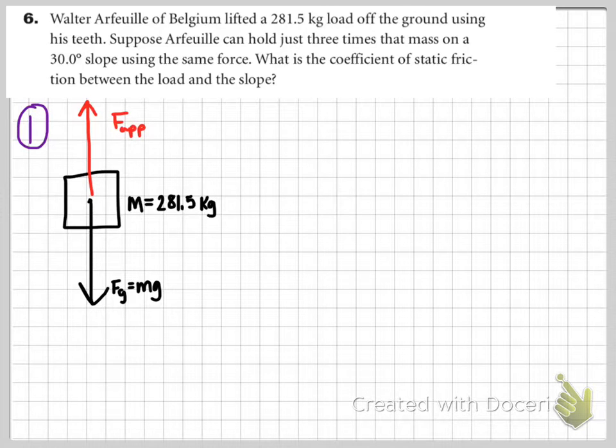It's Moser with some hints and tips on your 4C worksheet. This is 4C number six and we've got some crazy guy lifting 281.5 kilograms off the ground using his teeth.